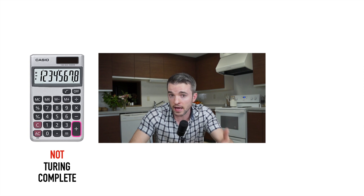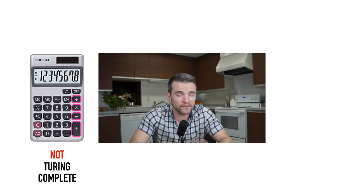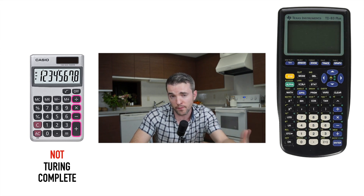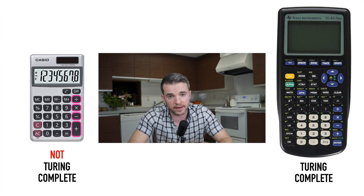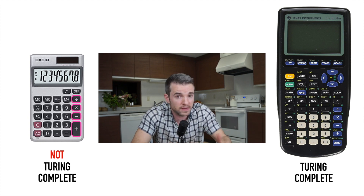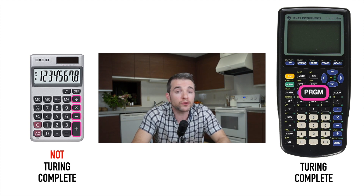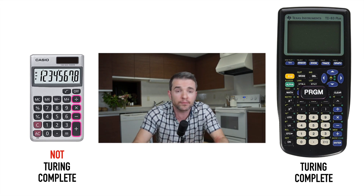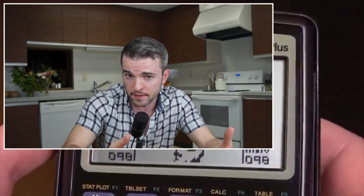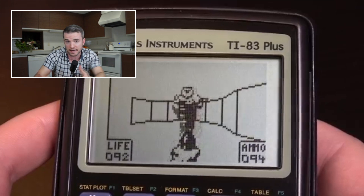However, the programmable graphing calculator you may have been required to buy in high school is Turing-complete. Even though you may have only used it for trig, log, or calculus functions, you may have noticed a button that said "program." In that menu you could program or download programs that could do anything, including play games. That said, the processor on a graphing calculator isn't that impressive, so you're not going to be running something like an Xbox on it.